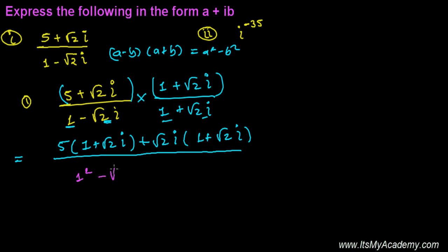In the next step, I can write 5 + 5√2i, and here 1 will multiply, so it is √2i, and √2 times √2 is 2, and i² is -1.